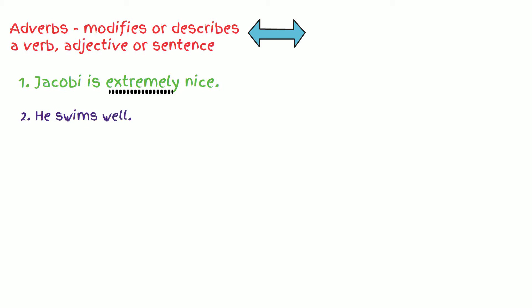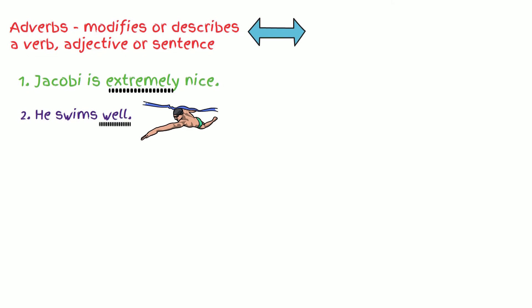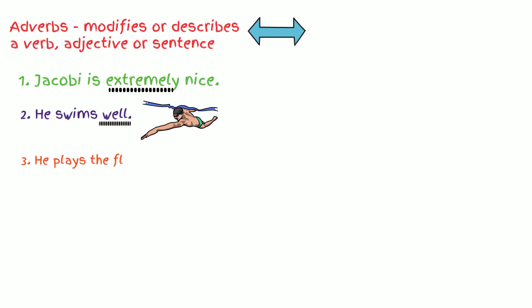Number two. He swims well. Well is the adverb because it describes the verb swim. Number three. He plays the flute beautifully. What do you think it is? It's beautifully. It describes how the flute is played.